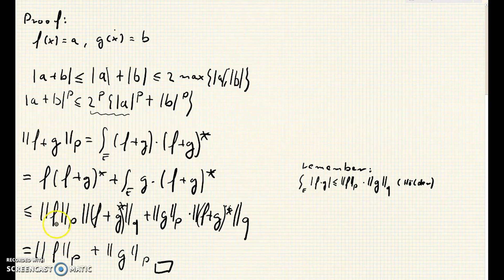which gives us that the sum of those two integrals is less than or equal to the p-norm of f times the q-norm of f plus g conjugate plus the p-norm of g times the q-norm of f plus g conjugate.